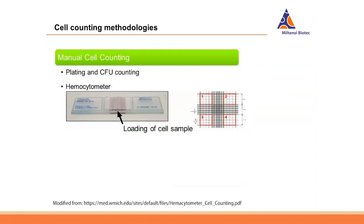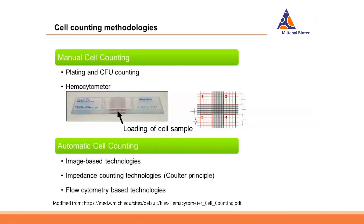There are numerous cell counting methodologies. The most commonly used ones are manual cell counting, for example plating or CFU counting. The most predominantly used one is the hemocytometer — the Neubauer's cell chamber — used still today in about 70% of all cell counting cases. However, it requires a lot of training and practice to get reproducible and accurate results. Easier ways are automatic cell counting methods such as image-based technologies, impedance counting technologies, or flow cytometry-based technologies.